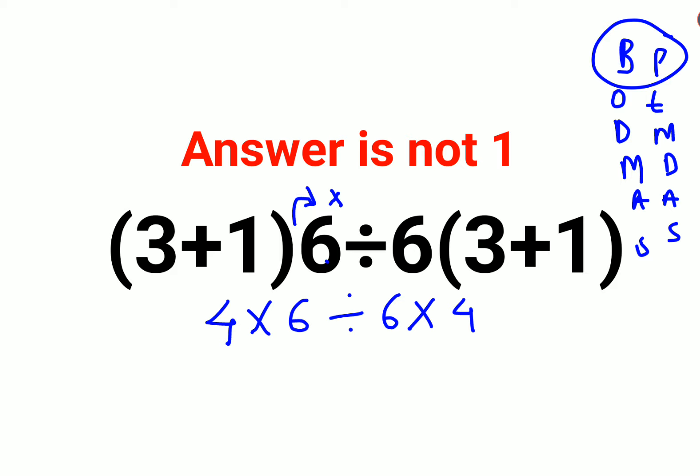So now please understand that in BODMAS or PEMDAS, always both of these division and multiplication signs hold the same importance. So if you come across a sum like this, where you have division as well as multiplication, these are the only two operations left in the entire sum. Then you have to always go from left to right.